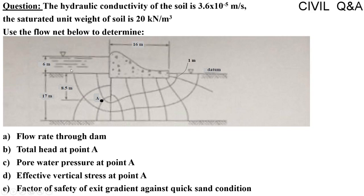About the flow net: the hydraulic conductivity of the soil is 3.6 × 10⁻⁵ meters per second and the saturated unit weight of soil is 20 kilonewtons per meter cube. Using the flow net we have to determine the flow rate through the dam, total head at point A, pore water pressure at point A, effective vertical stress at point A, and factor of safety of exit gradient against quicksand conditions.